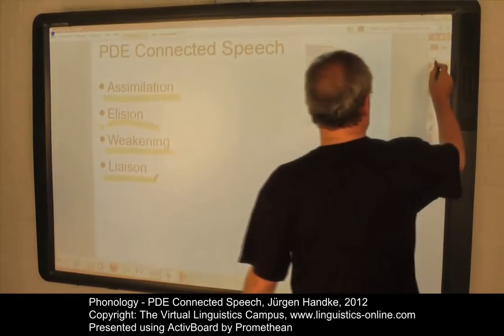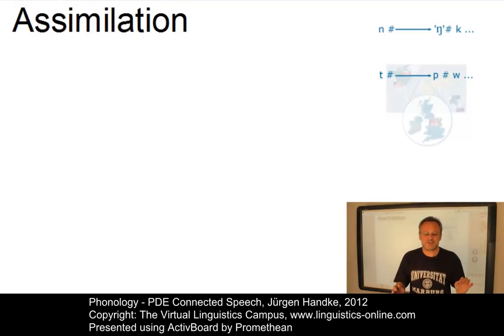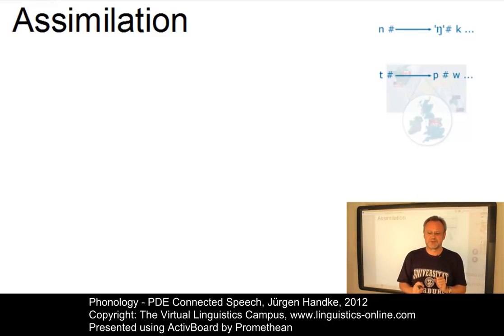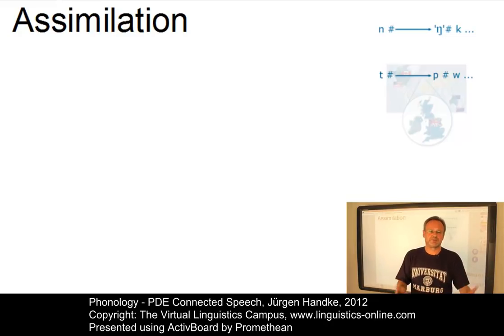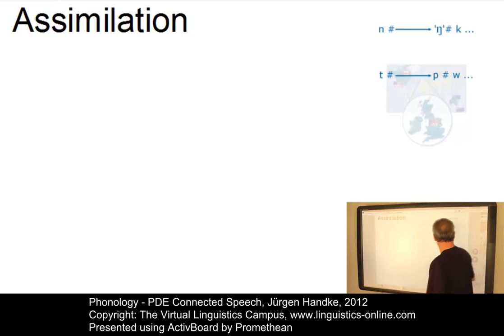Let us start with assimilation. Assimilation is defined as a process where adjacent phonemes influence each other so that they become more alike, or they assimilate — for example, in terms of voicing or in terms of their place of articulation. Here are two examples.